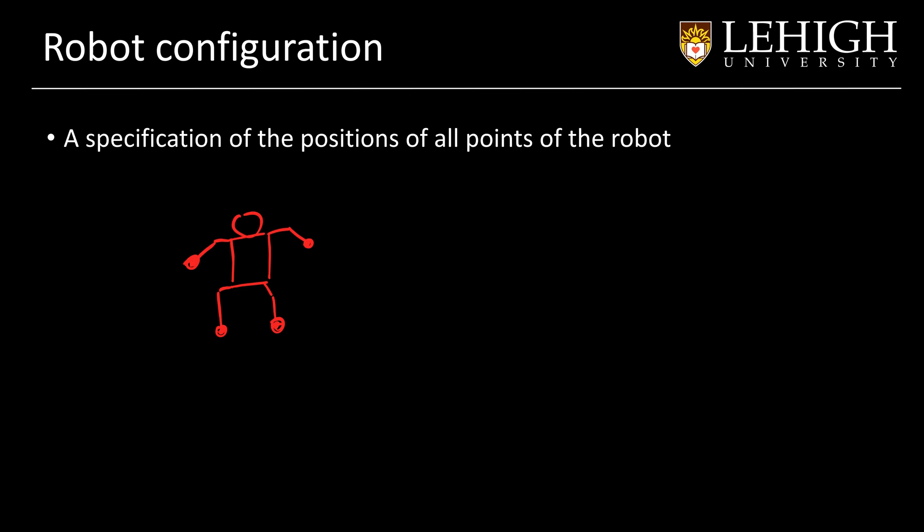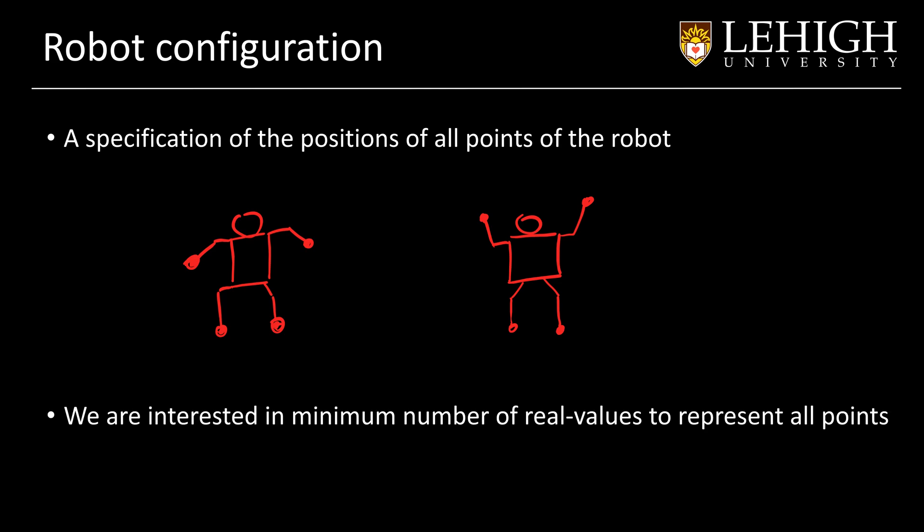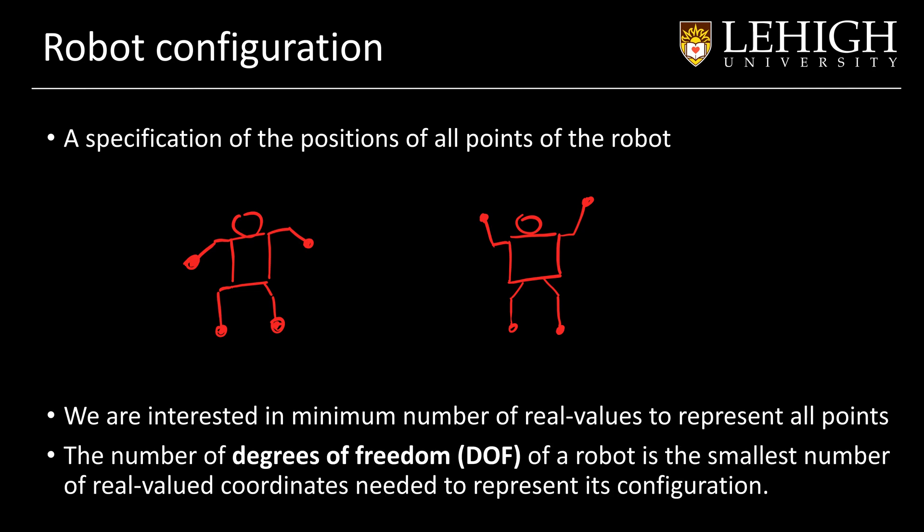Depending on how you set the joints, we can move from this configuration to another configuration. Now we are interested in finding the minimum number of real values to represent all these points. Another important concept is the number of degrees of freedom, which is the smallest number of real value coordinates needed to represent the configuration of a robot.